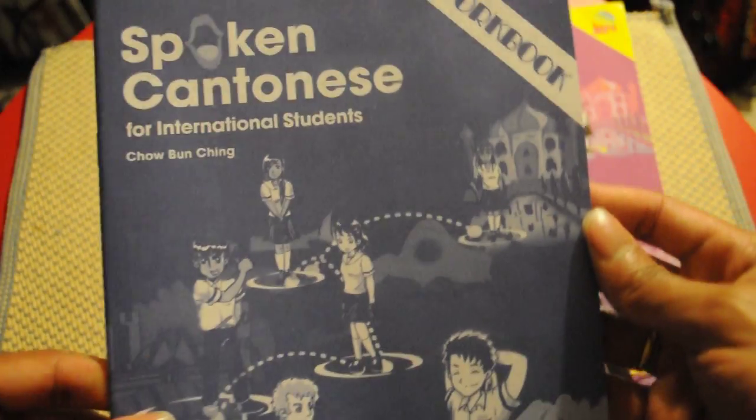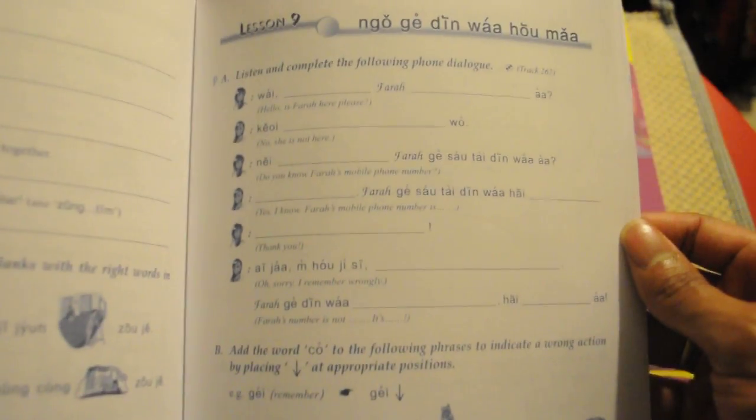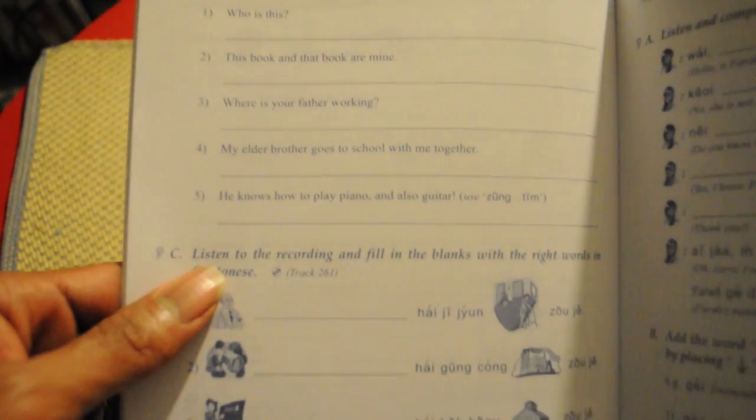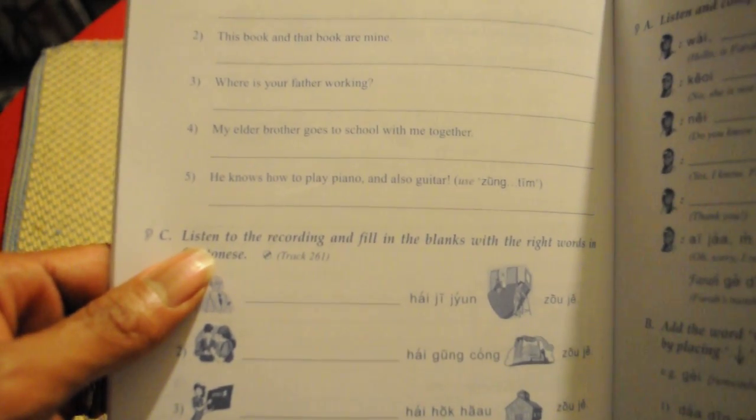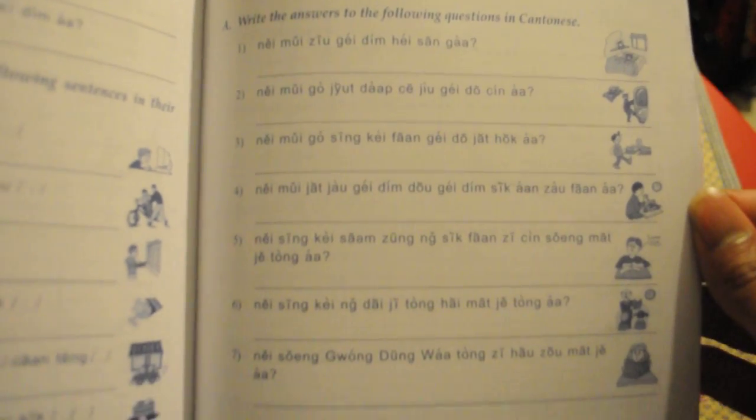That's all that is: fill in the blanks. I'm not a big fan of it, but a lot of people like to work on those type of exercises. Who was this? This book and that book and that book are mine. Then they give you some sentences, like these questions, and they ask you to write them out in Cantonese.